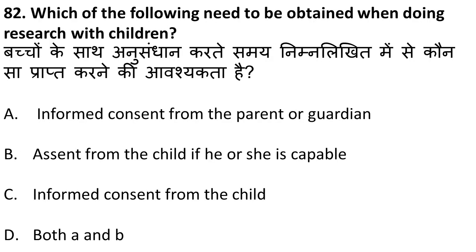Next question: what needs to be obtained when doing research with children? When your sample is children, you must have informed consent from the parent or guardian — that is mandatory. You should also take assent or approval from the child if she or he is capable of understanding what type of research is being conducted. The correct answer is both A and B — parent's consent and child's assent.